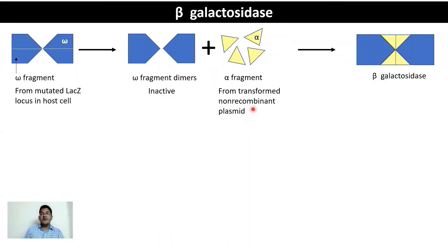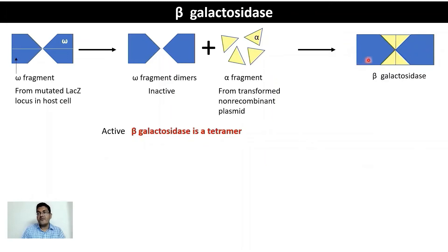The omega fragment comes from the host cell; the alpha fragment comes from the plasmid. The plasmid that synthesizes the alpha fragment is the non-recombinant plasmid, because the MCS (multiple cloning site) has been intelligently placed inside the lacZ' locus — the locus encoding the alpha fragment. When an insert is present, the lacZ' locus is disrupted and no alpha fragment synthesis occurs; in a self-ligated plasmid, the alpha fragment can be encoded in trans.